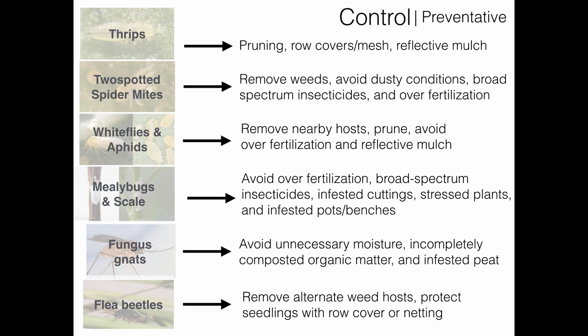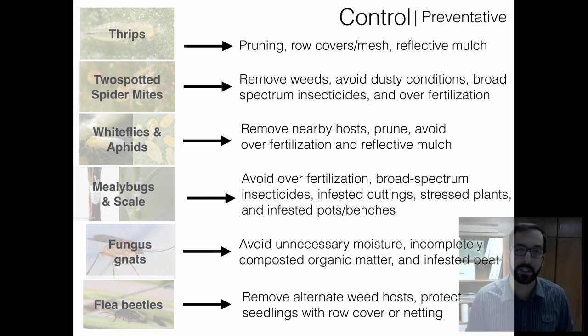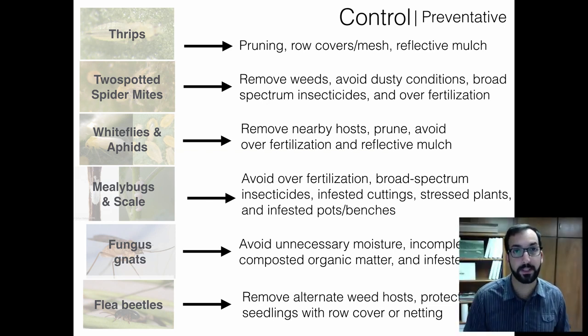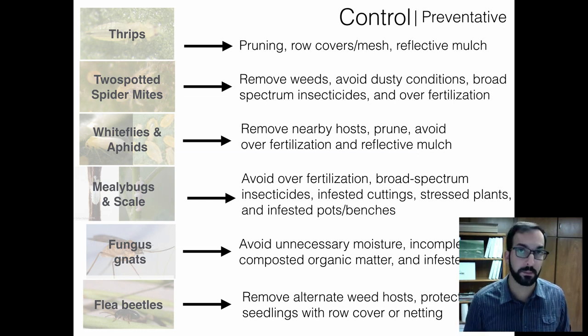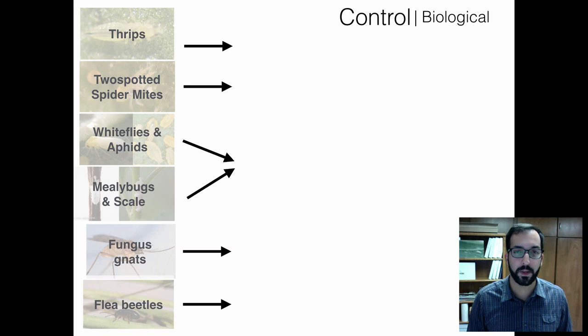For flea beetles, remove alternative weed hosts — very similar to many other pests. Protect seedlings with row cover or netting. Flea beetles are a much larger insect than thrips, so you can use a larger mesh. Seedlings are especially vulnerable — when plants are older they can tolerate some damage from flea beetles and be okay.